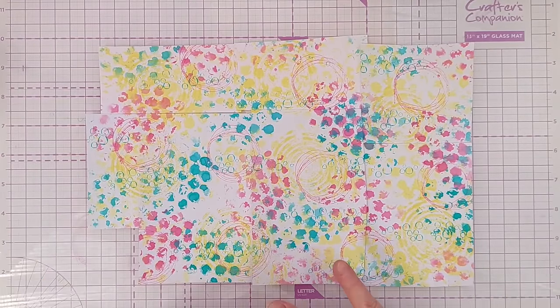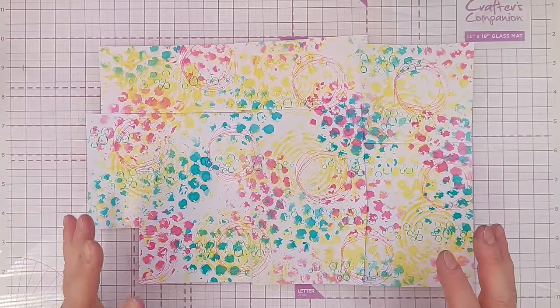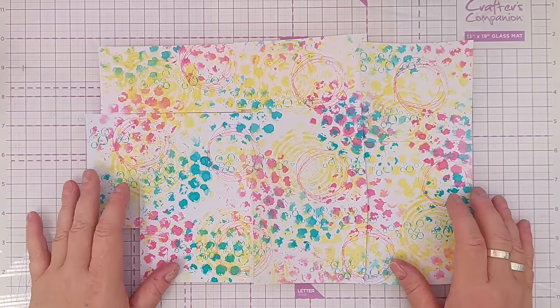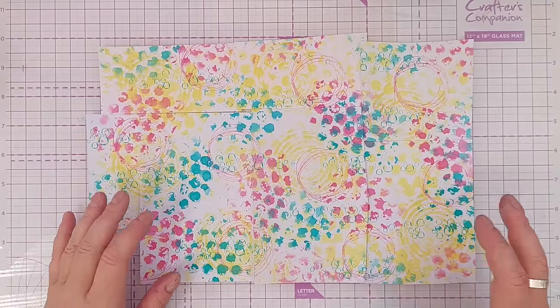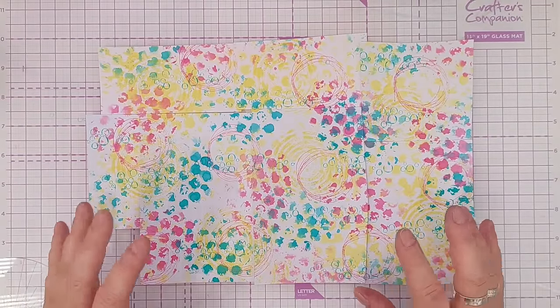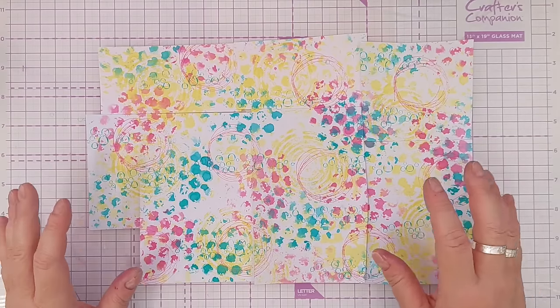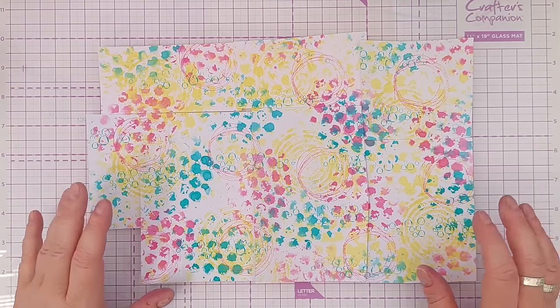Right I'm happy with that. I will bring in some black I think because when I do something really bright like this I like to bring in some black to really contrast heavily with all the color that's going on. But I will do that when I've decided what I'm going to cut this down into so I can be strategic about where I place the black elements.